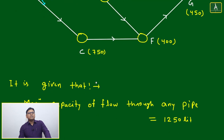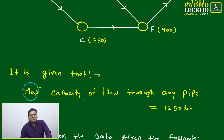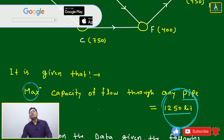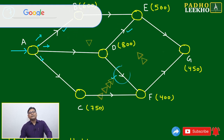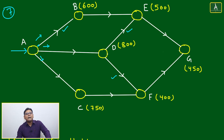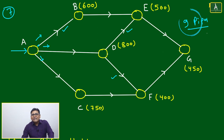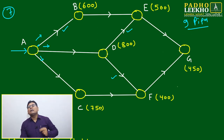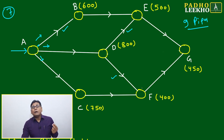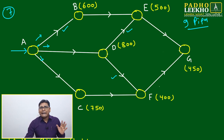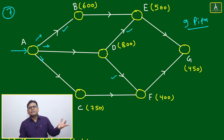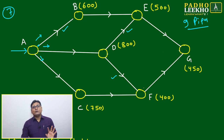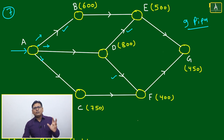The given data states that the maximum flow capacity through any pipe is 1250 liters. There are nine pipes in total, all having the same maximum rate. So at any point in time, any single pipe can carry at most 1250 liters. Carrying less is acceptable; carrying more is not possible.